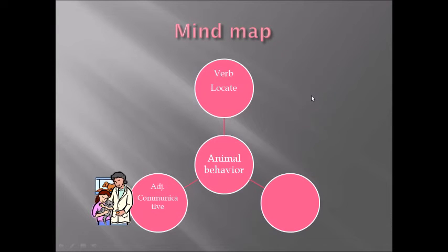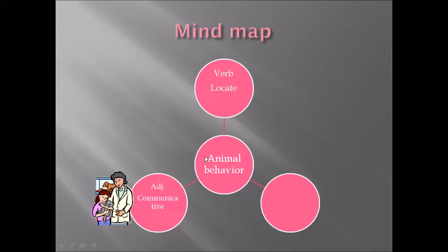The adjective is communicative. Next up, we are going to create a mind map in your notebooks. Remember, we have been using this tool for quite some time, which I find is extremely useful for you, especially because it gives you a visual image of the word itself. In the center, please write the topic, which is animal behavior.